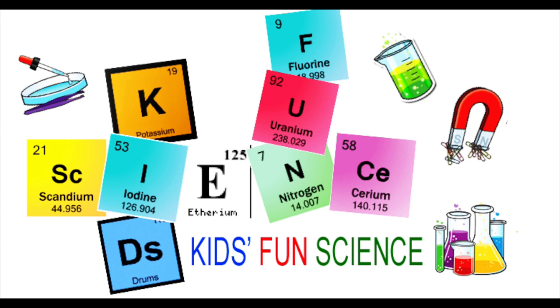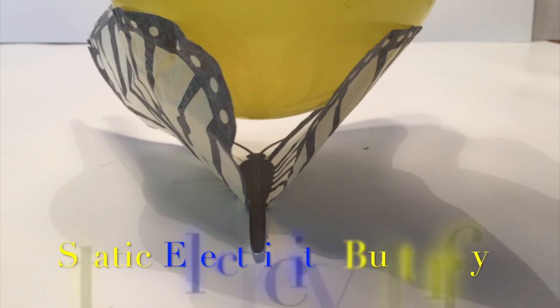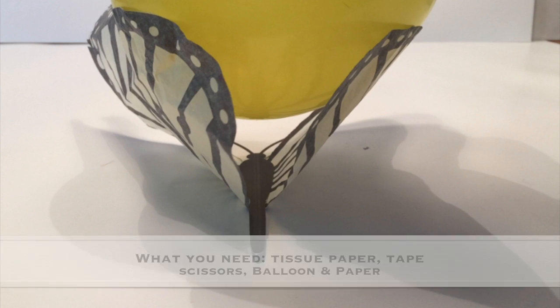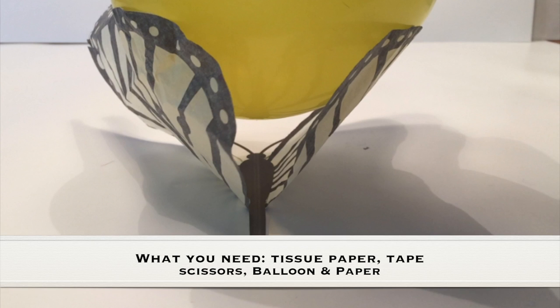Welcome back to Kids Fun Science. My name is Ken. Today's experiment is a static electricity butterfly. As always, adult supervision is required. What you need for this experiment is tissue paper, tape, scissors, balloon, and paper.